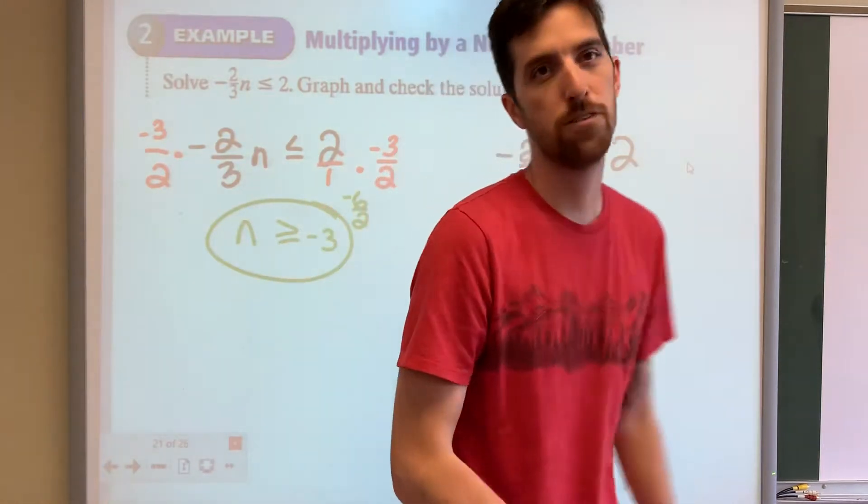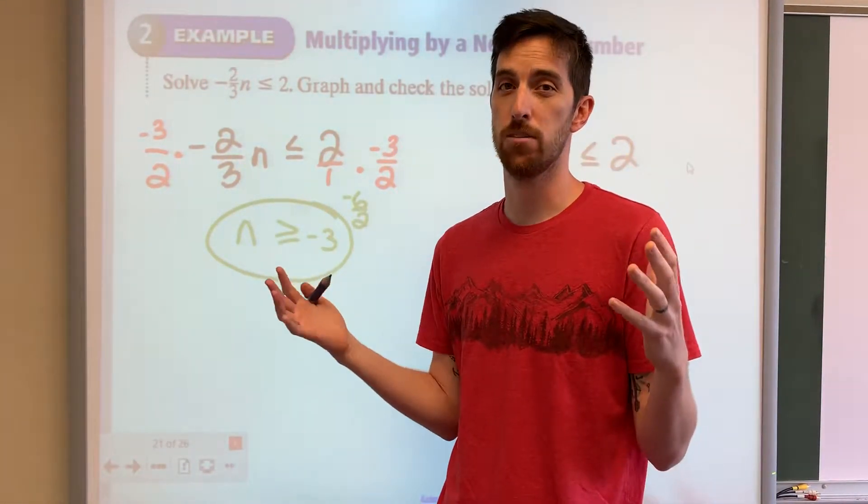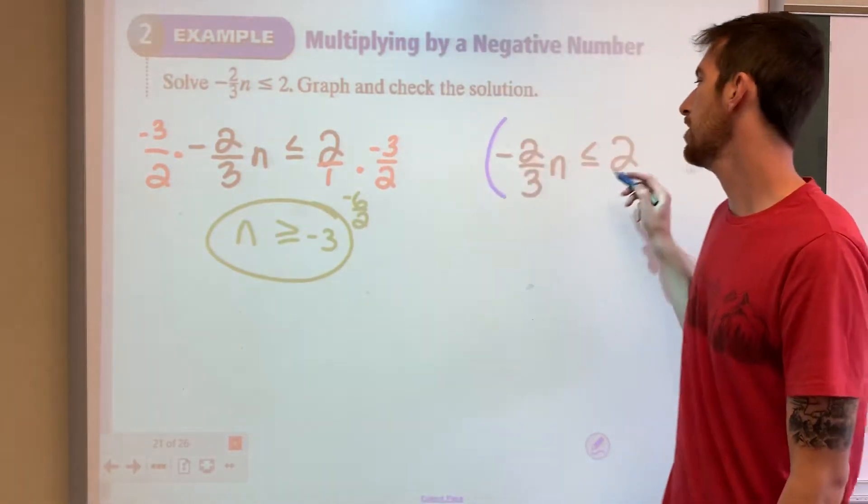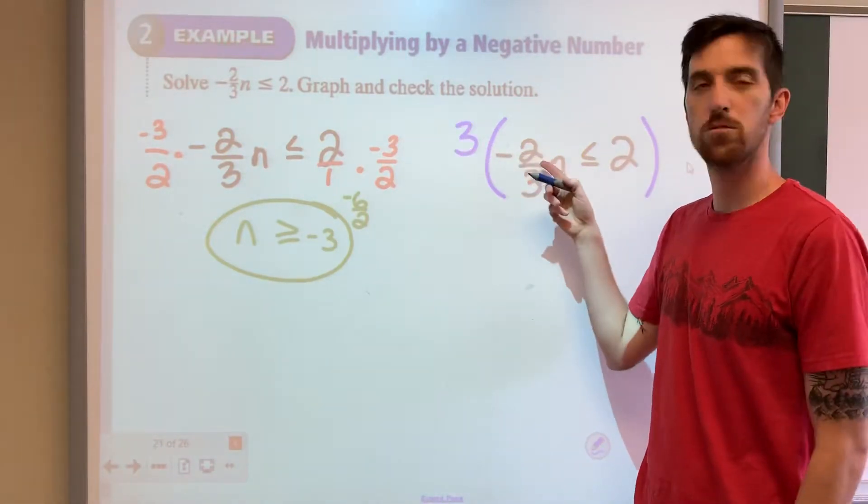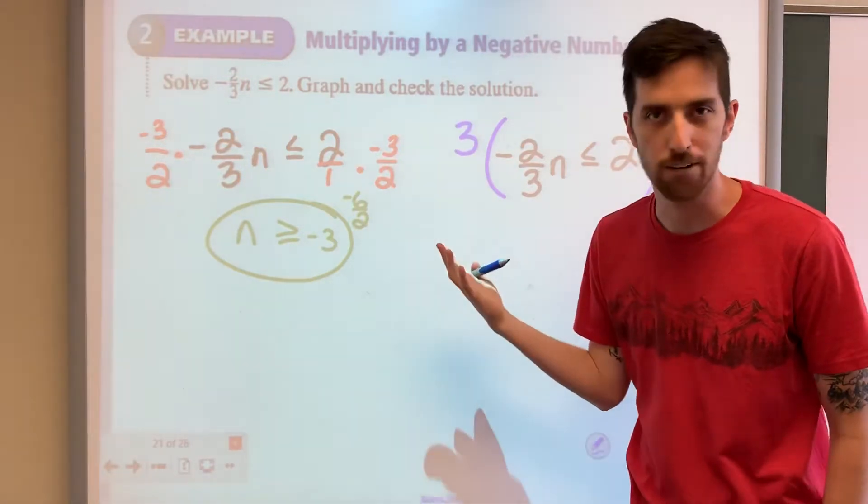Another way you can do it, if you remember from our equation chapter, you can multiply out the fractions right away by just multiplying by the denominator. The denominator is 3 in this case. 3 times negative 2 is negative 6. Divided by 3 is negative 2. It just cancels out the denominator if it's the same.